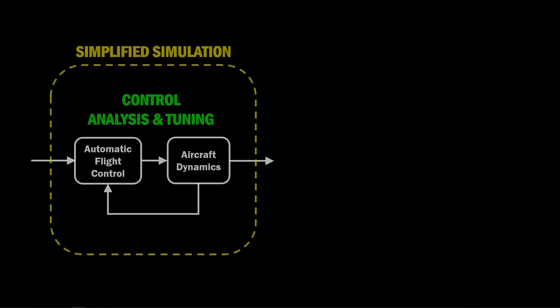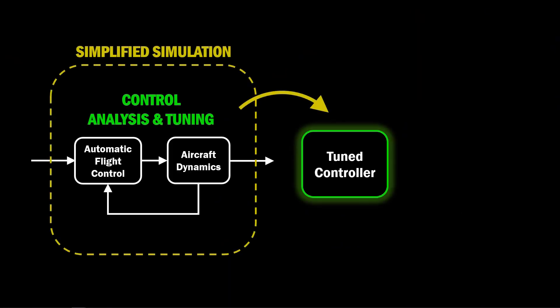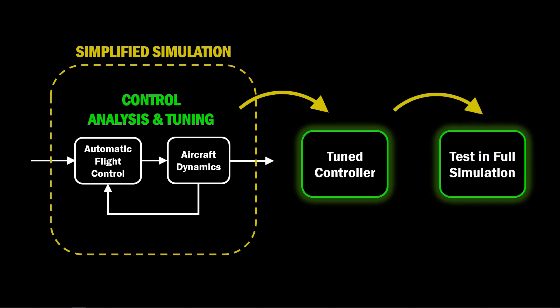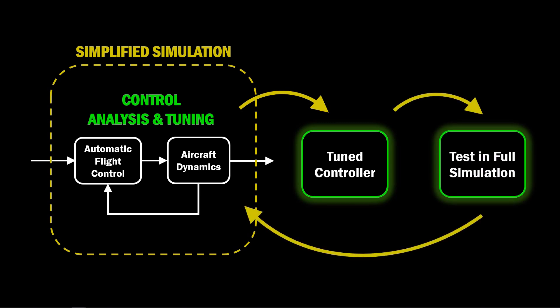Behind aircraft performance is a flight control system. Flight control design can be an iterative process involving tuning in a linear, simplified environment, and controller evaluation in a full, non-linear aircraft simulation. The engineer would retune the controller to address any issues found after full, non-linear investigation.